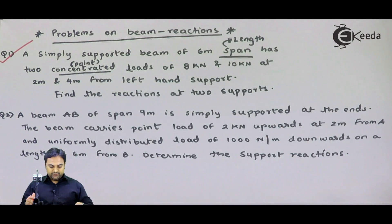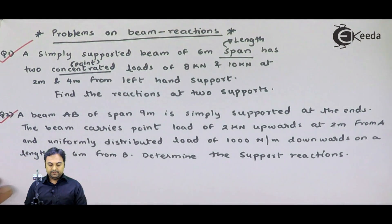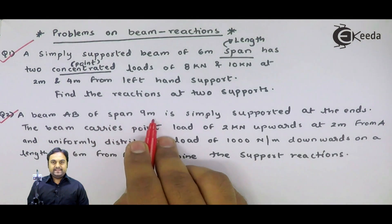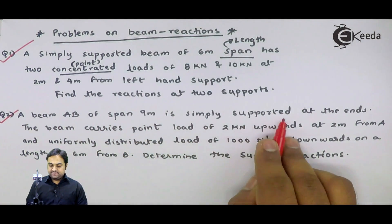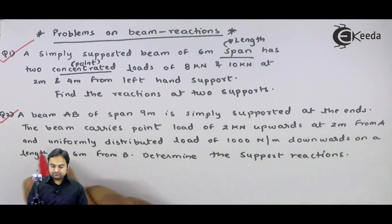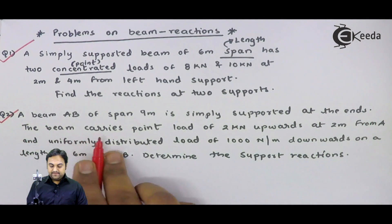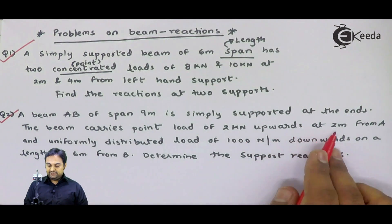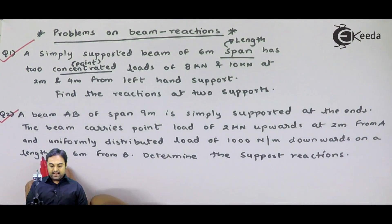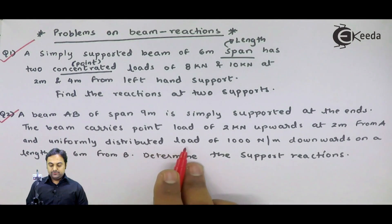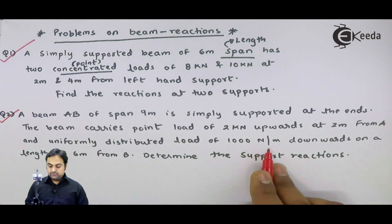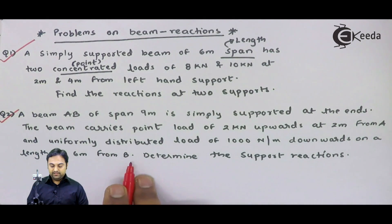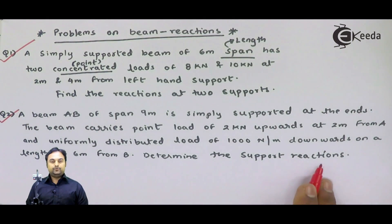Let us take the second question. A beam AB of span 9 meters is simply supported at the ends. The beam carries a point load of 2 kilonewton upwards at 2 meters from A, and a uniformly distributed load of 1000 newton per meter downwards on a length of 6 meters from B. Determine the support reactions.